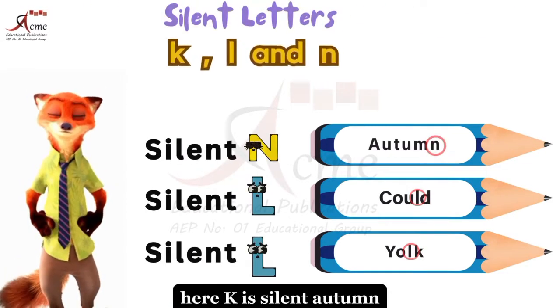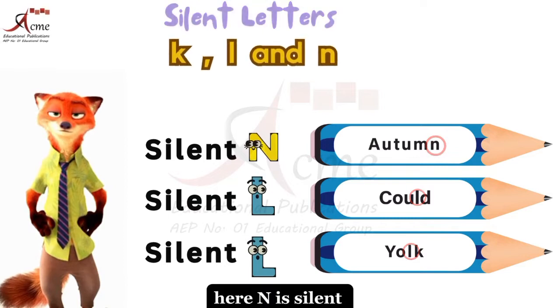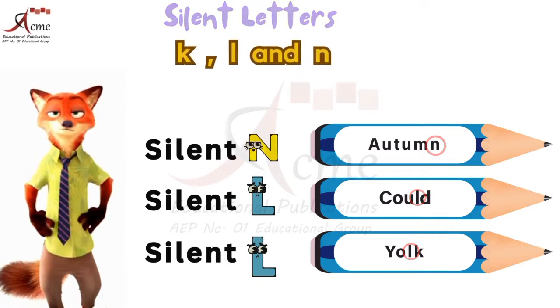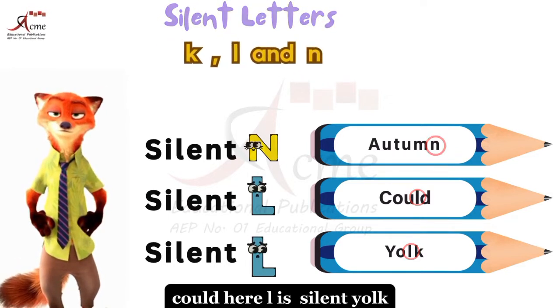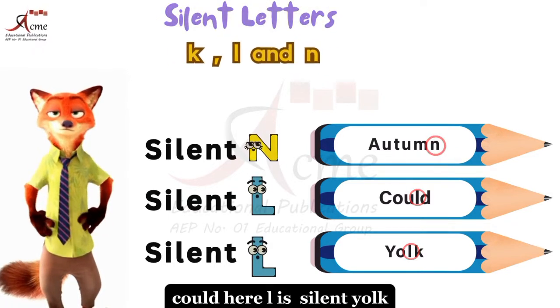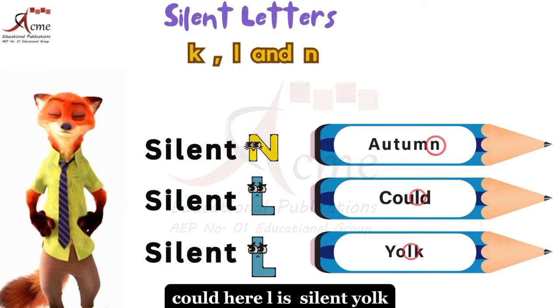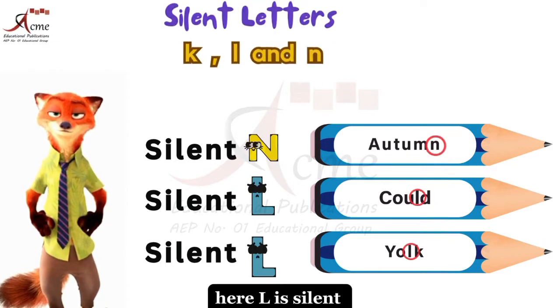'Autumn' — here N is silent. 'Could' — here L is silent. 'Yoke' — here K is silent.